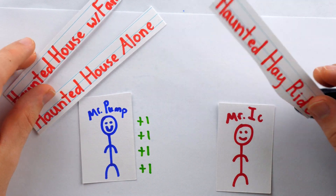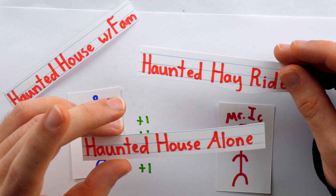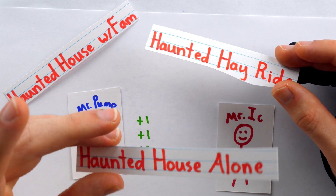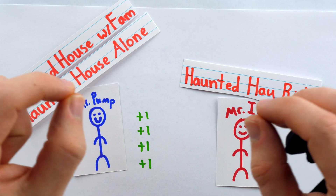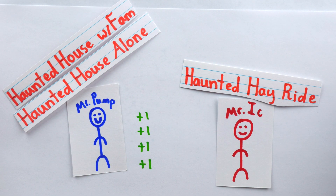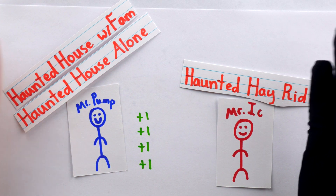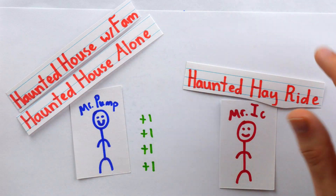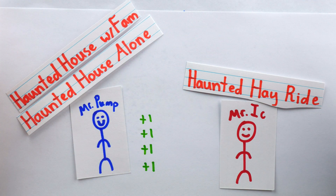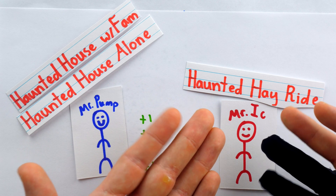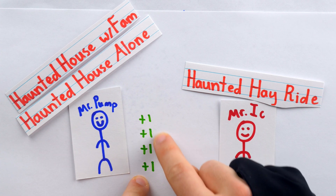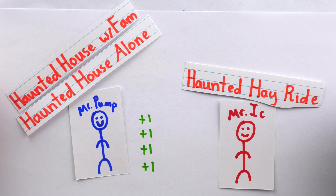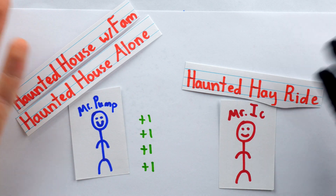If Mr. Ick does indeed prefer the haunted hayride to going to the haunted house alone, yet he wouldn't trade one plus a little bit for the other, what does it even mean to have the preference? If I claim to prefer A to B but would only be willing to engage in an exact exchange between them without any additional compensation, would it not be more accurate to say I am indifferent between A and B? One simple way to disregard the importance of this situation is that anyone who had a cycle of intransitive preferences like this would very quickly be exploited and thus basically booted from the economic model.